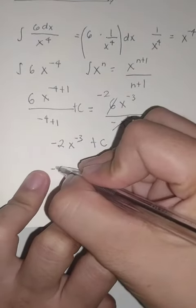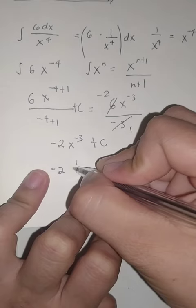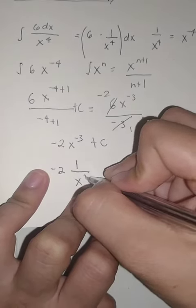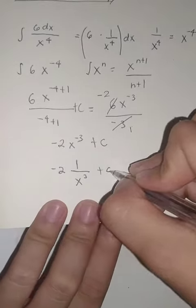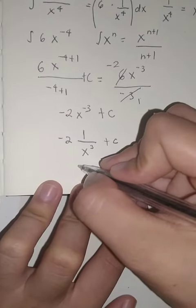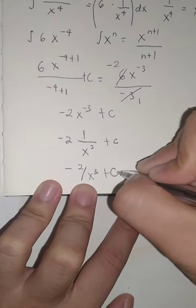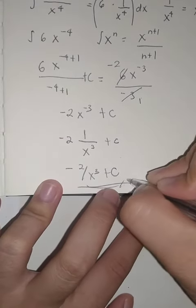This becomes negative 2 over 1 multiplied by 1 over x cubed plus C, or equals to negative 2 over x cubed plus C. This is our final answer.